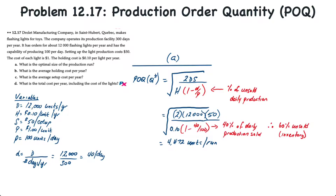Working along, Q* equals the square root of 2 times 12,000 times 50, divided by 0.10 times (1 minus 40 over 100), where 40 is the daily demand and 100 is the daily production rate. So 40 over 100 means 40% of daily production is sold, resulting in 60% unsold remaining in inventory. That works out to 4,472 units per production run — the optimal production run size, or production order quantity.